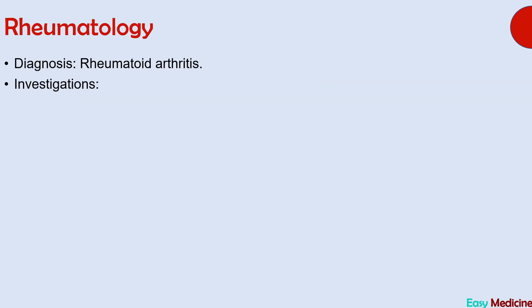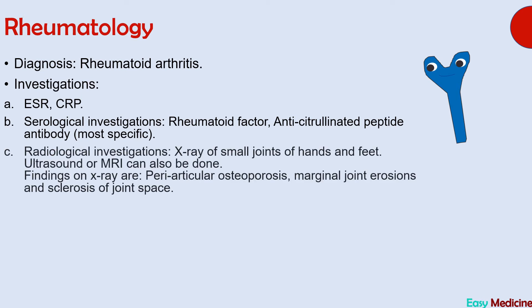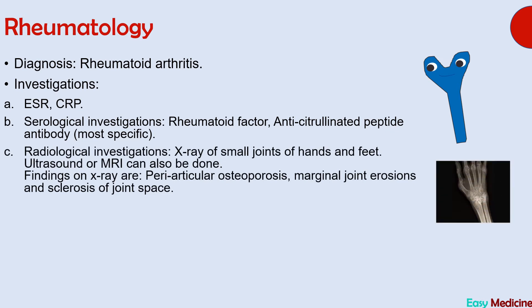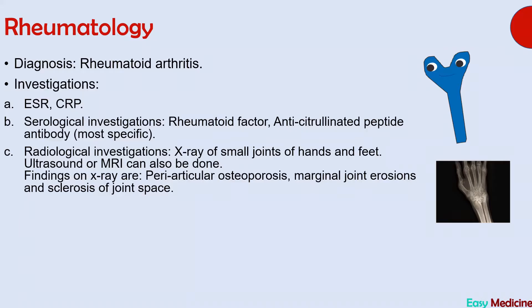Investigations for rheumatoid arthritis include ESR and CRP levels. Serological investigations are rheumatoid factor and anti-citrullinated peptide antibody assay — the latter is more specific. Radiological investigations include X-ray of small joints of hands and feet, ultrasound, or MRI. Radiological findings on X-ray are periarticular osteoporosis, marginal joint erosions, and sclerosis of the joint space, visible in the hand X-ray shown.